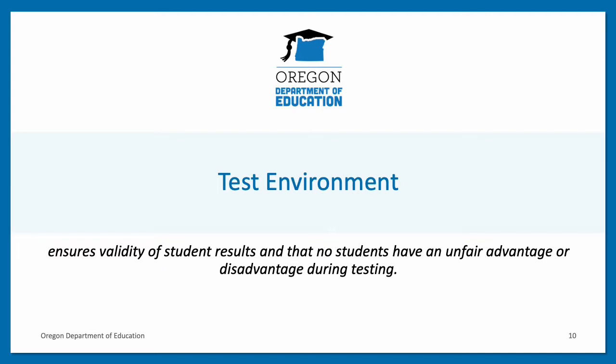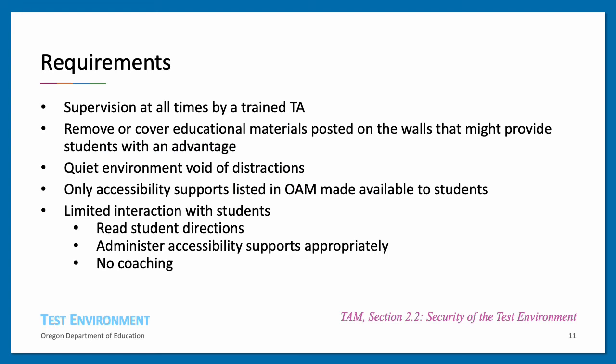After the trained TA sets up the test session and students begin testing, those students must be supervised by the TA until the end of the testing session. The testing environment must be quiet and void of distractions or educational materials posted on the walls that might provide students with an advantage. Students may only have access to supports from the Oregon Accessibility Manual that are administered according to the rules set out in that manual. TAs need to limit their interaction with students to ensure consistency in testing environments across schools and districts. This includes reading the student directions verbatim, following the TAM and the OAM, and never coaching students.